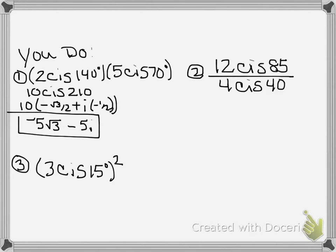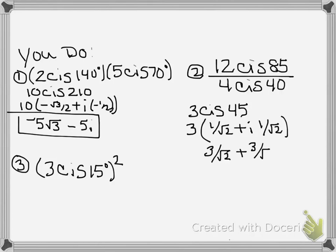Let's come over here. 12 divided by 4, that should give you 3. Cis 85 minus 40 is going to give you 45 degrees. Expand it. 3 times cosine of 45 degrees, 1 over root 2 plus i sine of 45 degrees, 1 over root 2. Distribute that 3. 3 over root 2 plus 3 over root 2i. You do not have to rationalize. If you want to, go for it. No big deal.